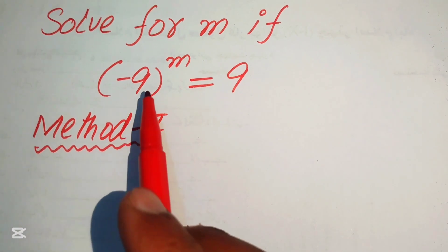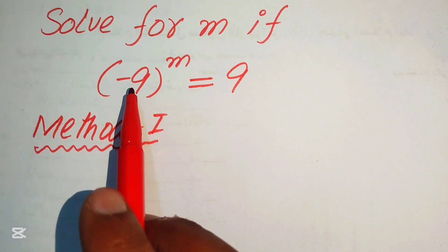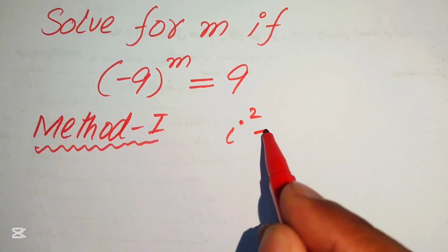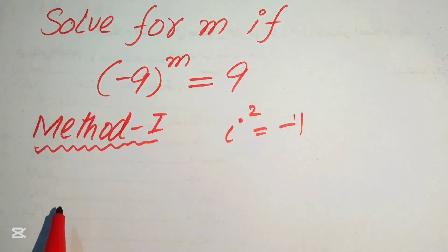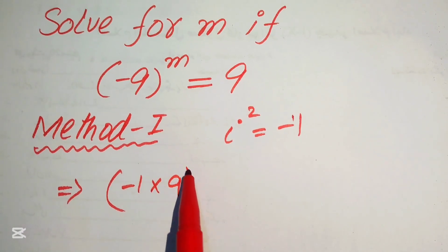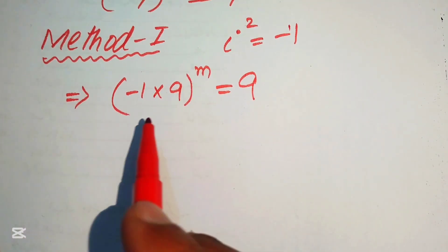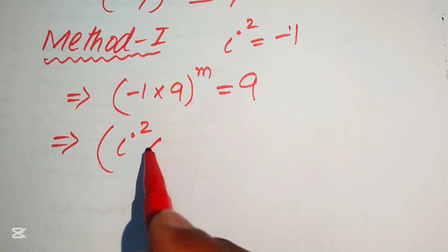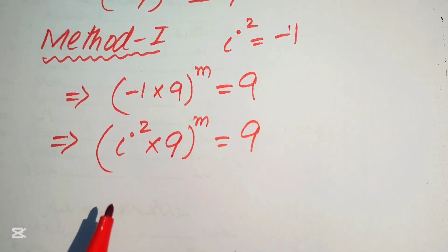In the first step, focus on the left-hand side. Our base is minus 9. We use the fact that iota squared equals minus 1, so we replace minus 1 with iota squared. We separate the terms and write minus 1 multiplied by 9 to the power of m, equals 9. Then we replace minus 1 with iota squared, giving us iota squared multiplied by 9, all to the power of m, equals 9.